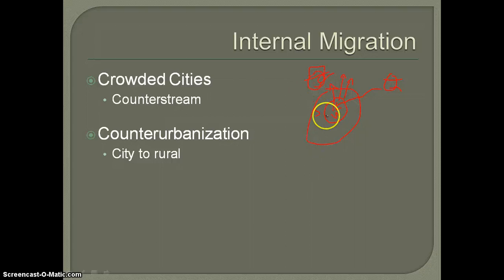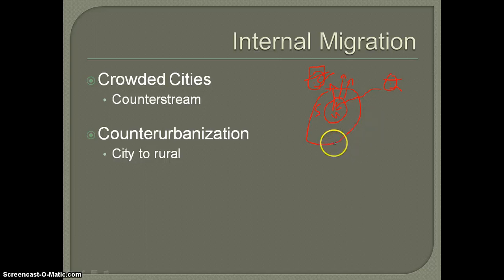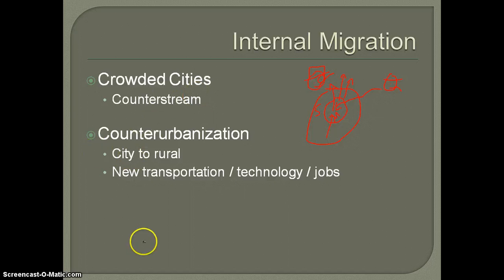Of course, these are going to be people who either don't need to be in the city or who have access to the city on a regular basis via personal transportation. A lot of this in the United States was helped by the development of the interstate highway system. These large highways allow people to move relatively quickly into large urban settings.